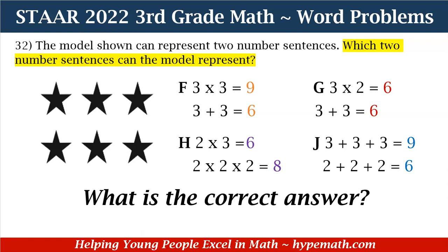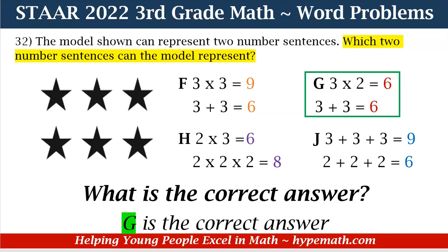What is our correct answer? We need to find the two number sentences that have the same value, and that value needs to be six. The answer is G — three times two equals six, and three plus three equals six, which correctly represents this model.